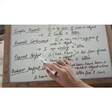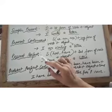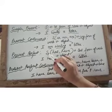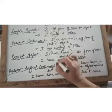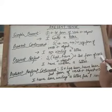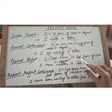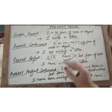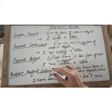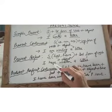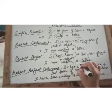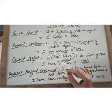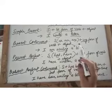Now, present perfect. The structure is: subject plus has/have plus third form of verb (past participle) plus object. With a singular subject use 'has'; with a plural subject use 'have.' For example: 'I have written a letter' — 'I' is the subject, 'have' is the helping verb, 'written' is the third form of 'write,' and 'letter' is the object. This means you have just finished or just started that action.